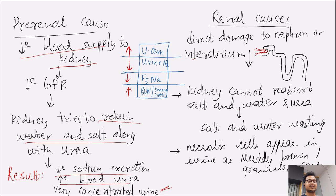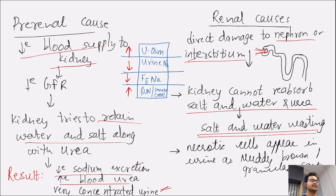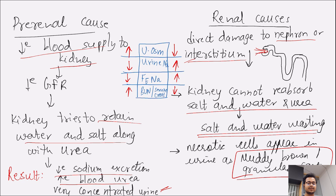In comparison, in renal cause there is direct damage to the tubules, so the kidneys cannot reabsorb salt, water, and urea — resulting in salt and water wasting. The patient excretes dilute urine. Urine osmolarity is low, as the patient cannot concentrate the urine. Urine sodium and fractional excretion of sodium is increased. Urea is wasted in the urine, so BUN to serum creatinine ratio is reduced. Also in renal cause there is tubular necrosis, so necrotic cells appear in the urine as muddy brown or granular casts.